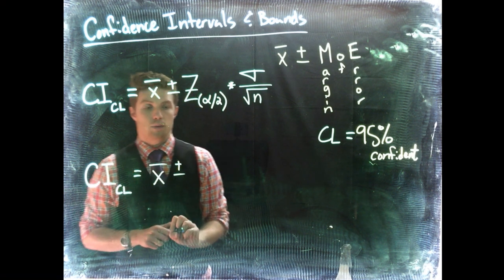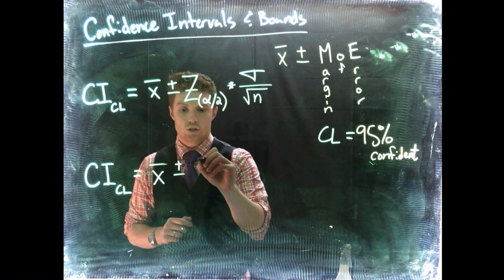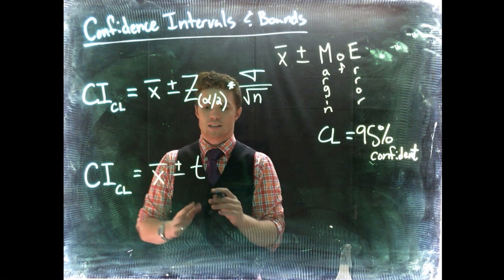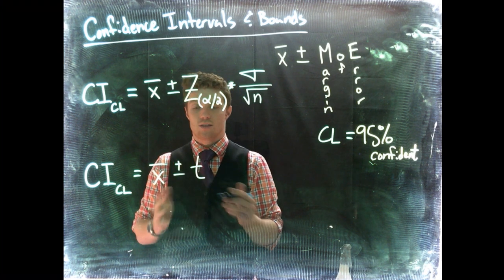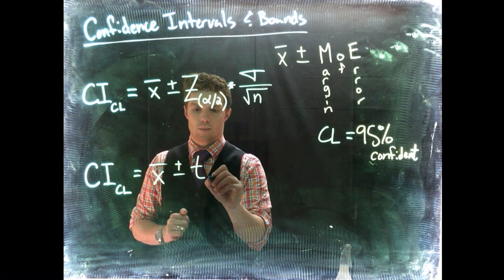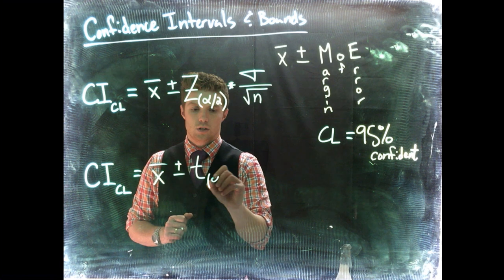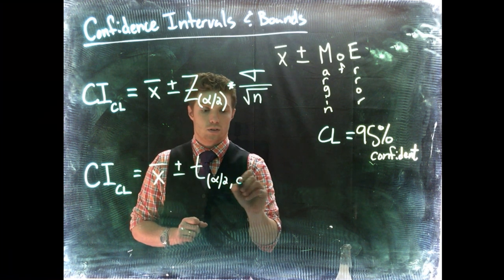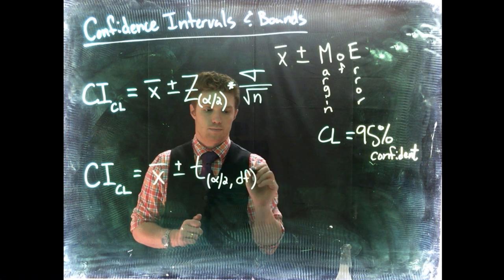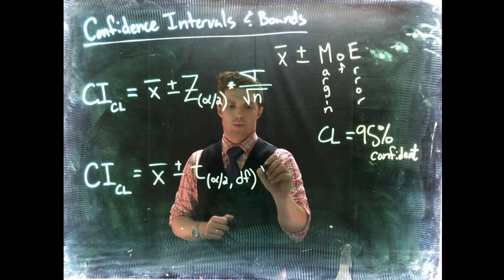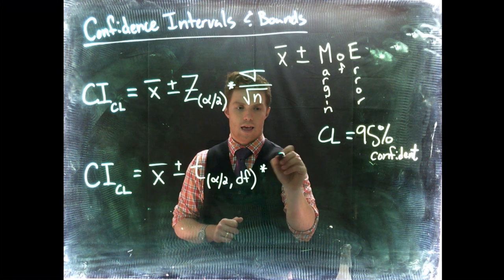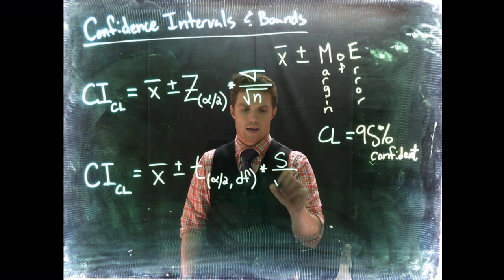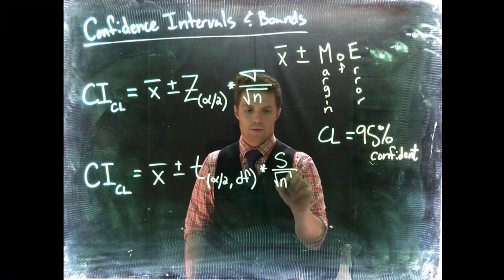But plus or minus, now this time we're going to do a t score. So it's a studentized t. It's just a different distribution. Thankfully, it's really easy to use within our commander. We are still going to do alpha divided by 2, but now we need what's called also the degrees of freedom. And then we multiply by s, the sample standard deviation, divided by the square root of n.